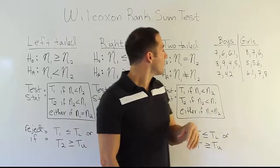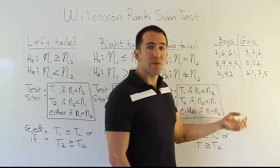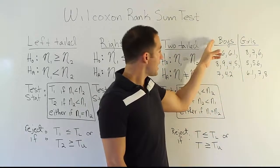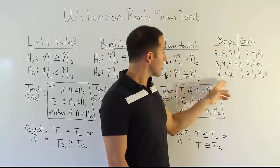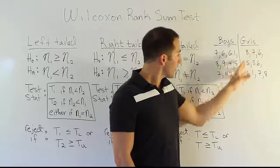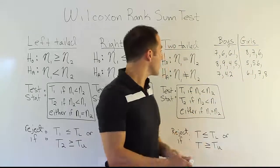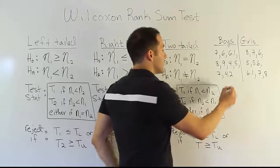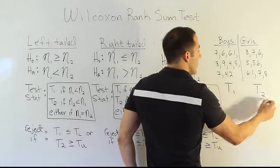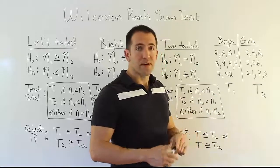Then, once we have all the ranks, we're going to separate them again and add up all the ranks that the boy jump distances got, and add up all the ranks that the girl jump distances got. We'll call those rank totals T1 and T2, and those will be the totals for those groups.